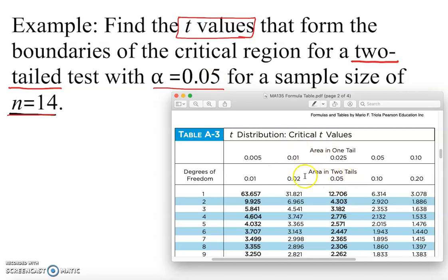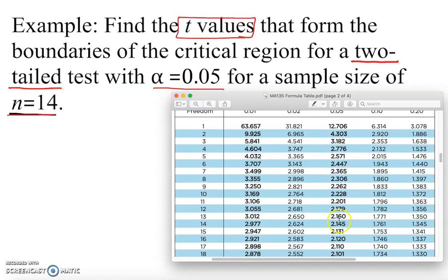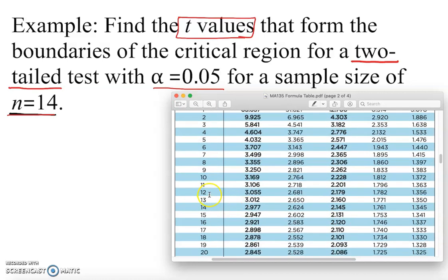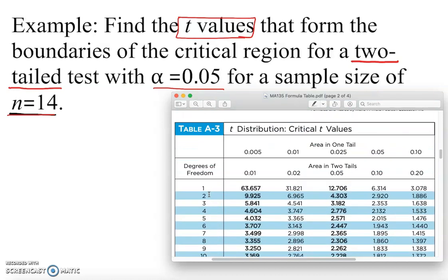We know which row to use to get the critical value, but there's one more thing. Look at these numbers - they're so big. There's something written: degrees of freedom. What is degree of freedom? Degree of freedom is basically n minus 1. In this case, we have 14 minus 1, which equals 13.